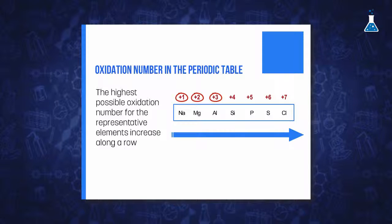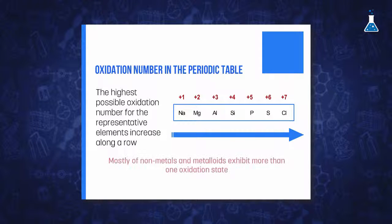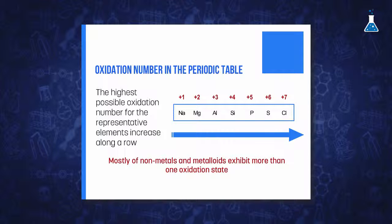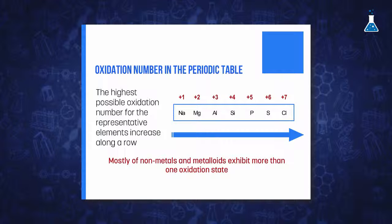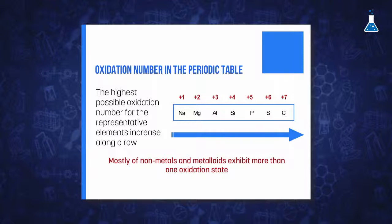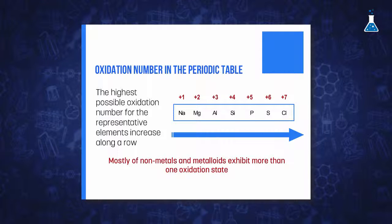However, it is important to note that most nonmetals and metalloids exhibit more than one oxidation state. For example, chlorine has various stable oxidation numbers such as 1−, 1+, 3+, 5+, and 7+. Once we know how to correctly assign oxidation numbers to elements in a compound, we will be able to understand how to balance redox reactions using these oxidation numbers.